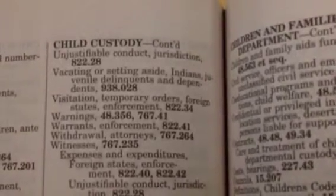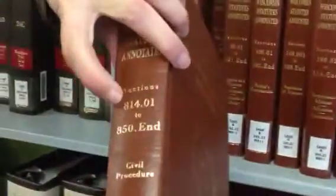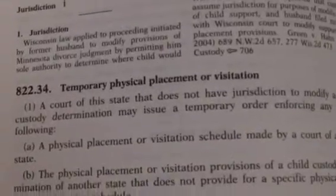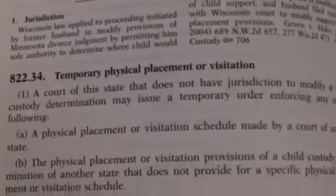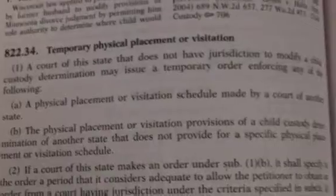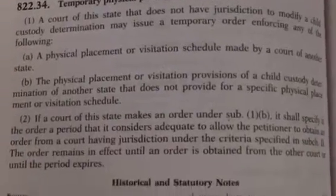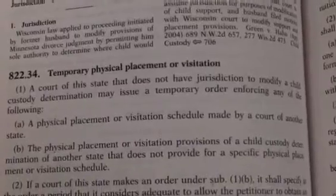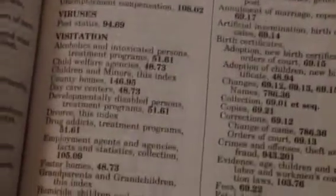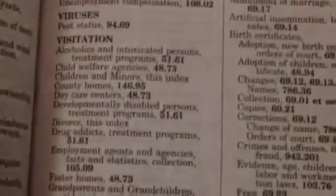We look in the main volumes under the statute number. These statutes are arranged in numerical order by statute number, and in this volume it will contain statute 822. We're looking for 822.34. What we have found is there is a statute 822.34, but this is really not the right statute, because it is in the civil procedure sections of the statutes and it is about visitation, but it's really about enforcing foreign visitation orders. So let's look again. This is just another instance of when you're looking in indices, you really have to think the way the people who index the statutes think. And sometimes you can, and sometimes you can't.